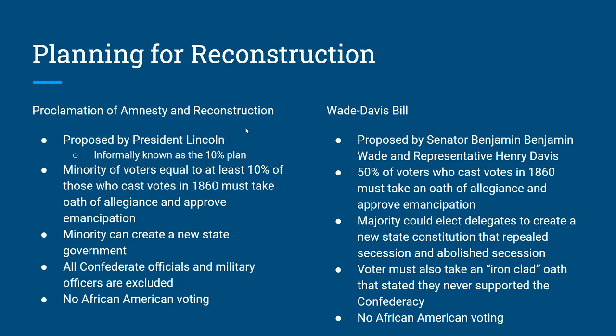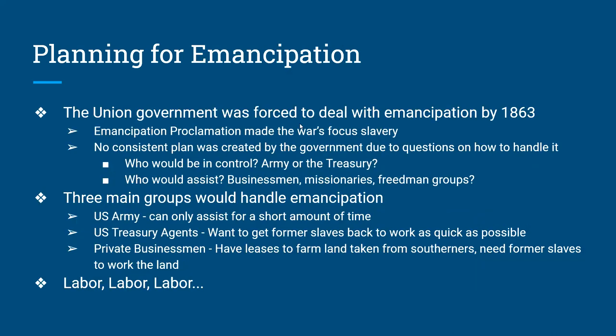Lincoln never signed the Wade-Davis bill, and Congress never passed Lincoln's 10% plan. When Lincoln was killed in April of 1865, there was absolutely no plan on what to do. About the only things known for sure were that emancipation was coming and that the government was going to have to deal with all these former slaves. So what was going to happen with absolutely no plan in place?